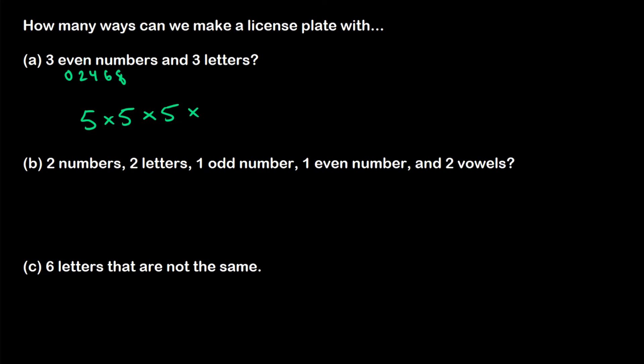Now for the letters, well, there's 26 different letters in the alphabet. We can have 26 letters for our first choice, 26 letters in the second choice, and 26 letters for the third choice. So in the end, we have five to the three times 26 to the three different license plates that we can make. Okay. So that's a lot of license plates.